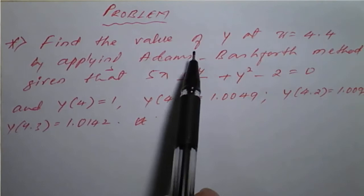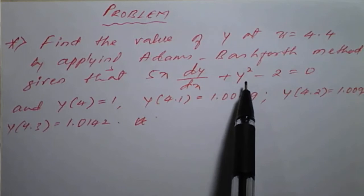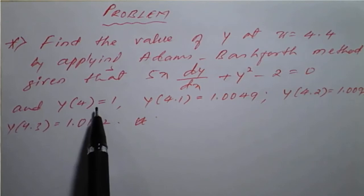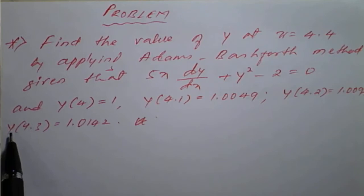Hello students. The problem is: find the value of y at x equal to 4.4 by applying Adams-Bashforth 4th method, given that 5x dy/dx plus y squared minus 2 equal to 0, and y(4) equal to 1, y(4.1) equal to 1.0049, y(4.2) equal to 1.0097, and y(4.3) equal to 1.0142.